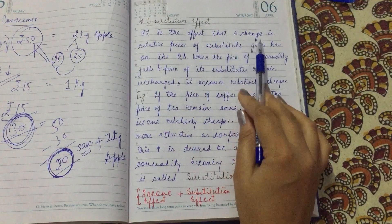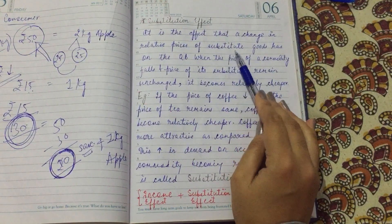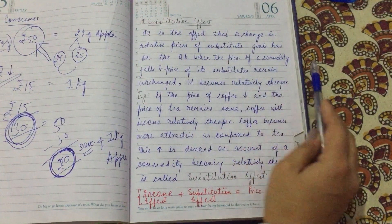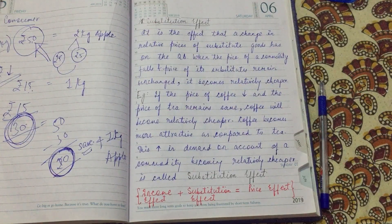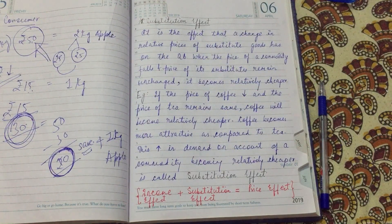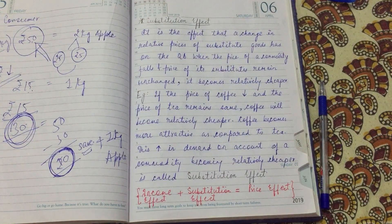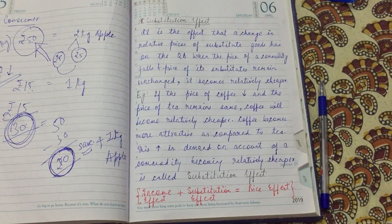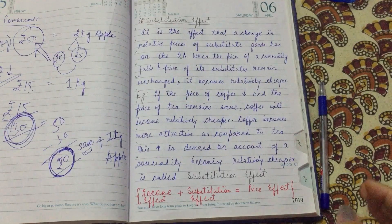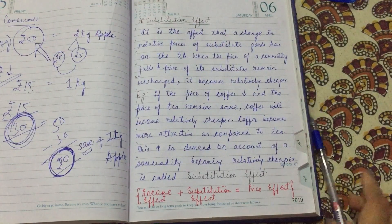The substitution effect is the effect that a change in relative prices of substitute goods has on the quantity demanded. When the price of a commodity falls and the price of its substitutes remains unchanged, this case is called the substitution effect — let's understand it with an example.